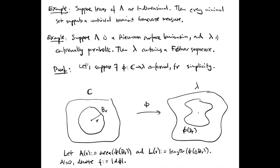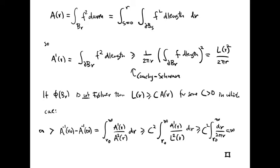Let's introduce some notation. We'll call our leaf lambda, and suppose we have a conformal map phi from the complex plane C to lambda. Let B_R denote the ball of radius R in the complex plane. Let A(R) denote the area of phi(B_R), and L(R) the length of the image of its boundary, the length of phi of the boundary of B_R. Furthermore, let F denote the norm of D of phi. Because phi is conformal, it scales lengths by F and area by F squared, so A(R) is the integral over B_R of F squared.